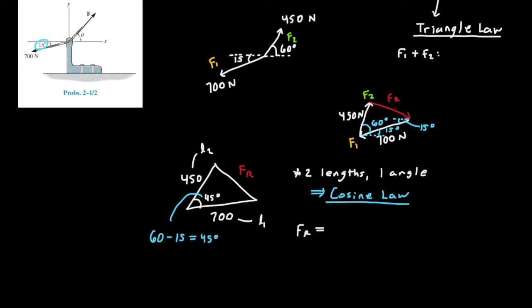And in this case, FR will equal the square root of 700 squared plus the 450 squared minus 2 times 700 times 450 times the cosine of 45 degrees. And note that the 45 degrees is across FR, so that's why we can use it here.